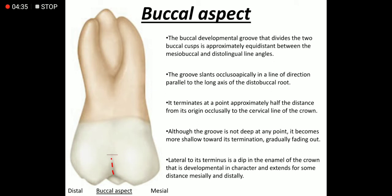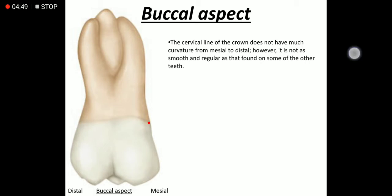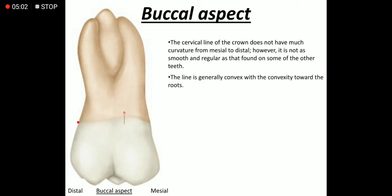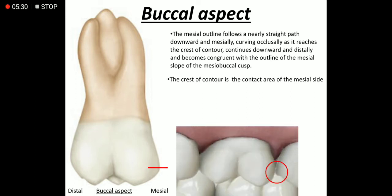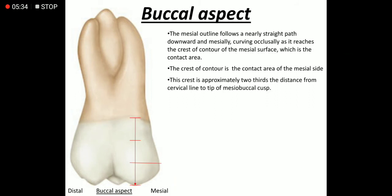Lateral to its terminus is a dip in the enamel of the crown that is developmental in character and extends some distance mesially and distally. The cervical line of the crown does not have much curvature from mesial to distal; however, it is not as smooth and regular as that found on some other teeth. The line is generally convex with the convexity towards the root. The mesial outline follows a nearly straight path downward and mesially, curving occlusally as it reaches the crest of contour, then continues downward and distally, becoming concurrent with the outline of the mesial slope of the mesobuccal cusp. The crest of contour is the contact area of the mesial side, located approximately two-thirds the distance from the cervical line to the tip of the mesobuccal cusp.